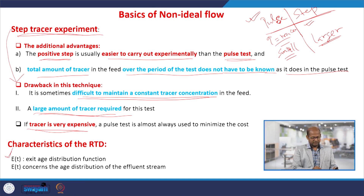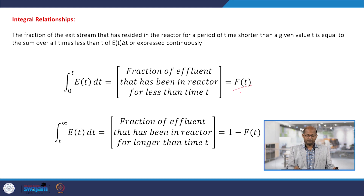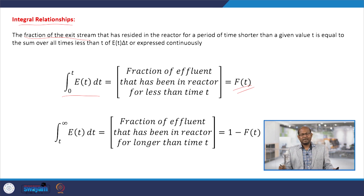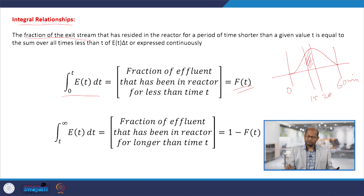Now, the characteristics of E(t) — the exit age distribution. Suppose we know E(t), then we can move to F(t). E(t) represents the fraction of material leaving: suppose we conduct the tracer test for 60 minutes. The tracer will come out from the reactor, possibly taking up to 60 minutes total. Within that, for example from 15 to 20 minutes, we can find how much quantity of the tracer has left from the reactor — from 0 to any time t we can find out.